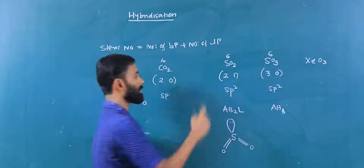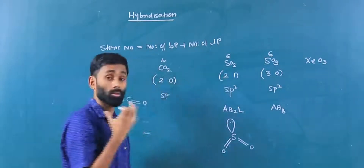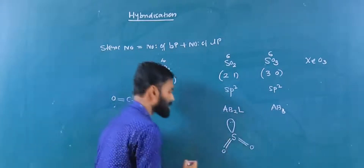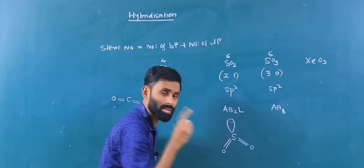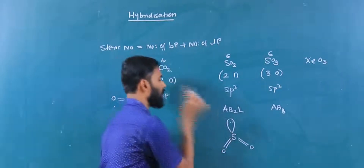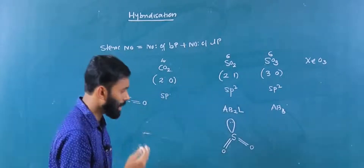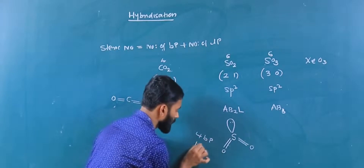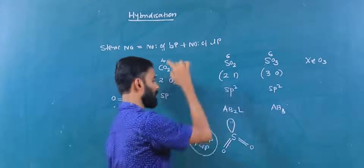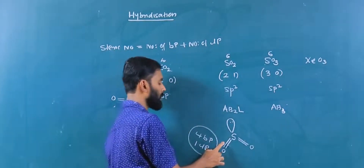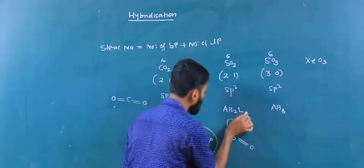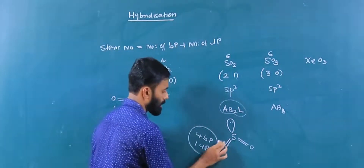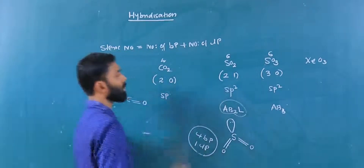For sulfur dioxide in the VSEPR model, we consider both double and single bonds together with lone pairs. We have a first bond pair, second bond pair, and one lone pair — giving AB2L type. Total: four bond pairs and one lone pair for sulfur dioxide.